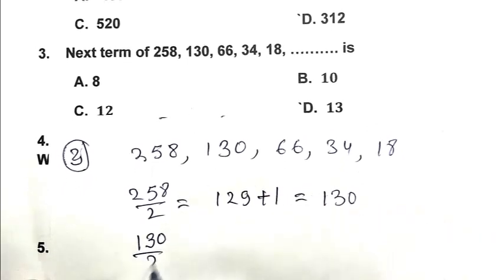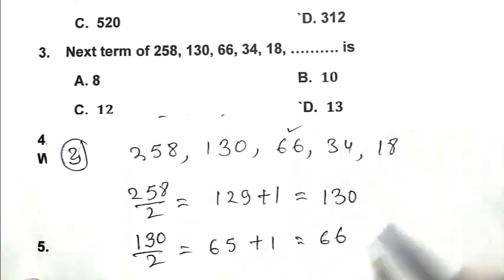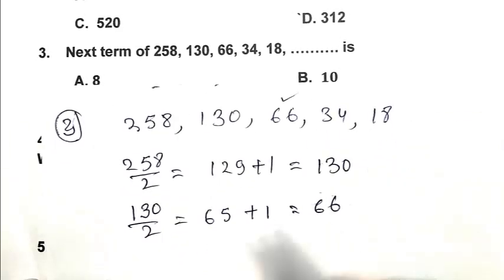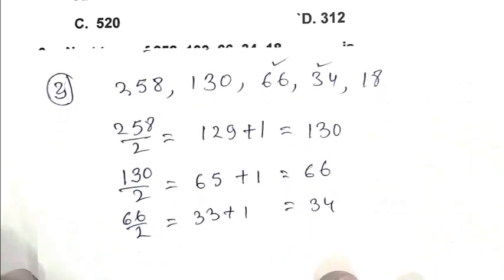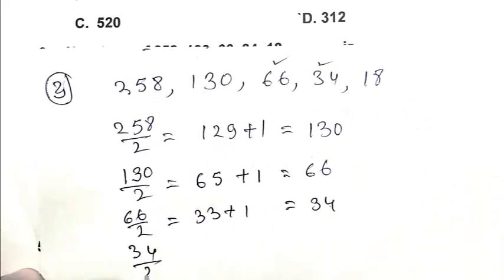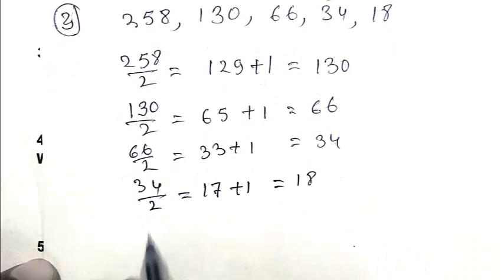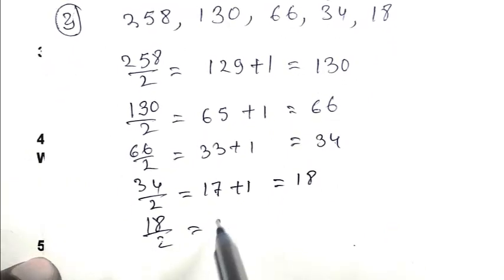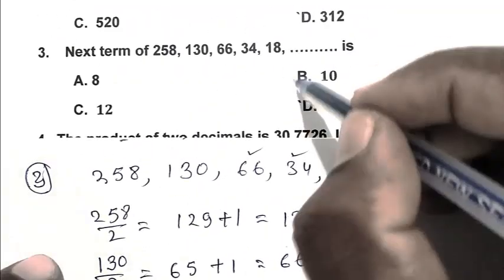So if we divide 66 by 2 we get 33 plus 1 is 34. Then 34 by 2 we get 17. We add 1 we get 18. So next term will be 18 divided by 2 which is 9 plus 1 that is 10. So B is the right answer.